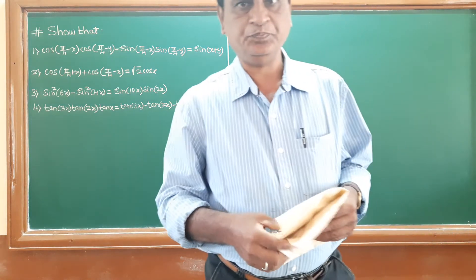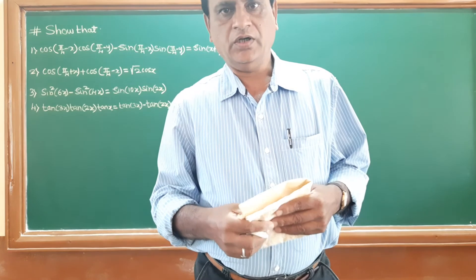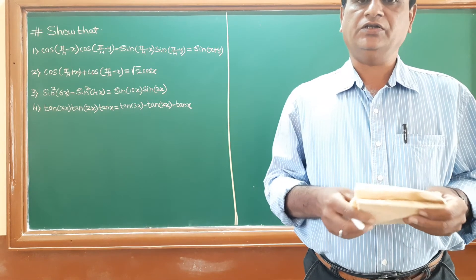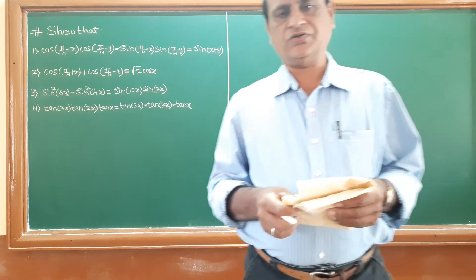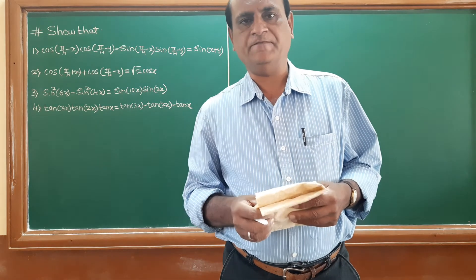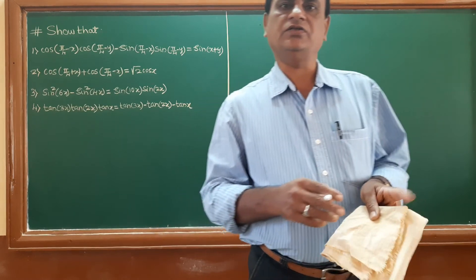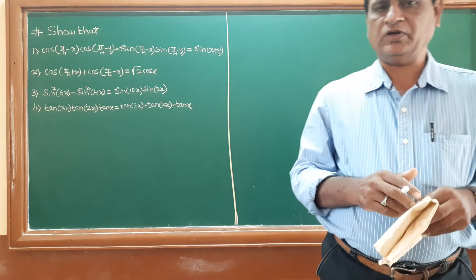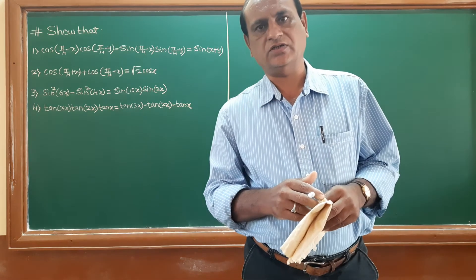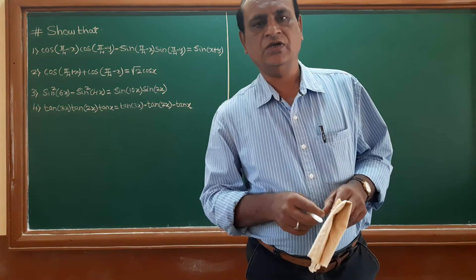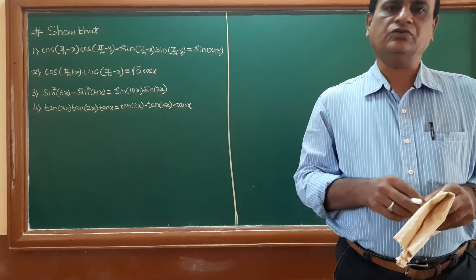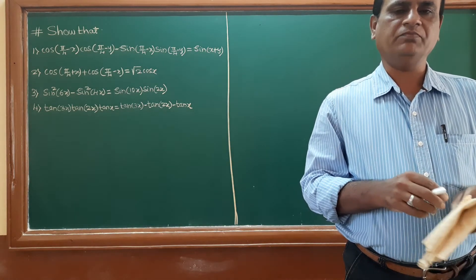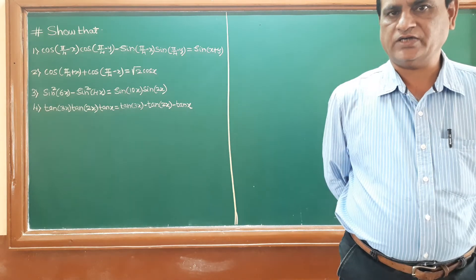Good morning, friends. In the last period, the formulas for sin 3x, cos 3x, and tan 3x were completed. The sin 3x formula is 3 sin x minus 4 sin³ x. The cos 3x formula is 4 cos³ x minus 3 cos x. And the tan 3x formula is 3 tan x minus tan³ x, all divided by 1 minus 3 tan² x.